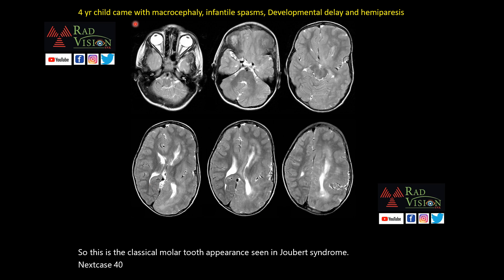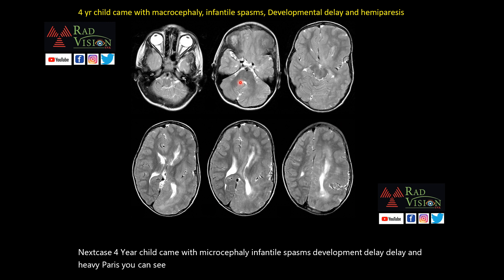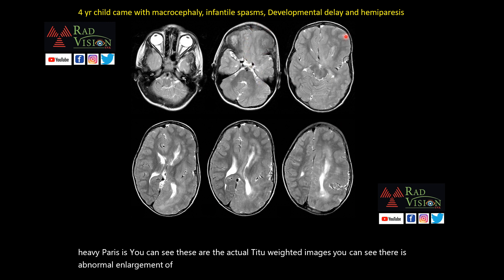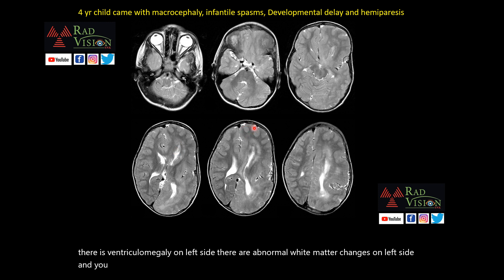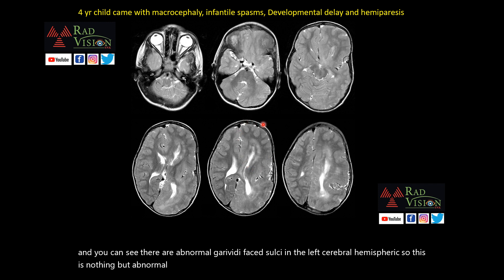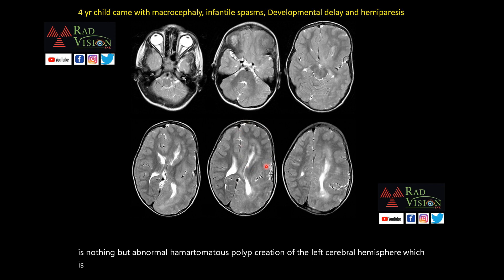Next case: a 4-year child with macrocephaly, infantile spasms, developmental delay, and hemiparesis. On axial T2 images, there is abnormal enlargement of the left cerebral hemisphere compared with the right, with ventriculomegaly on the left side, abnormal white matter changes, and abnormal gyri with effaced sulci. This is abnormal hamartomatous proliferation of the left cerebral hemisphere — classically seen in hemimegalencephaly.